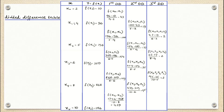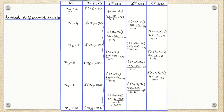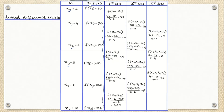You write the x values 2, 4, 5, 6, 8, 10 vertically — these are the different arguments x₀, x₁, x₂, x₃, x₄, x₅. Similarly the y values 10, 96, 196, etc. are written as f(x). After that we add another column called the first divided difference. The first divided difference is written as (96 - 10) / (4 - 2), because since the data points are not equally spaced, we must consider the gap in the denominator as well. This gives 43.